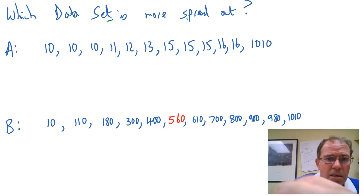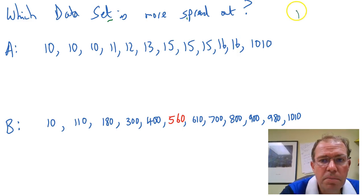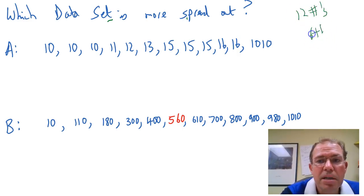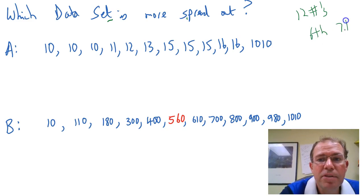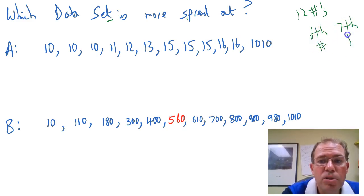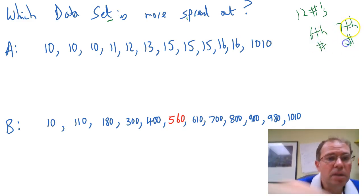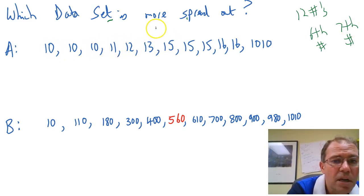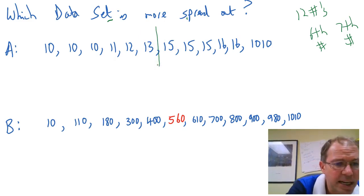So the median — because we've got 12 numbers we don't have a middle number, so we need to find the 6th number and the 7th number and go halfway between them. So if we look at the 6th number: 1, 2, 3, 4, 5 — the 6th number is 13, the 7th number is 15, so the median would be exactly halfway there.